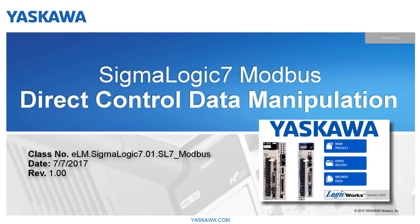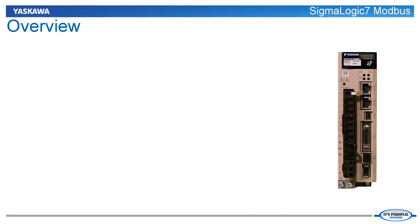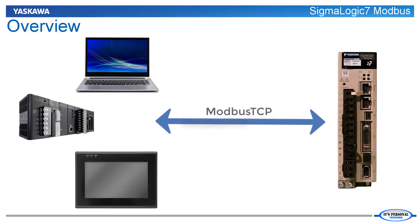This video is part of the Sigma Logic direct control certification process and describes the essential techniques to successfully control the Sigma Logic 7 Modbus servo using Modbus TCP registers. The Sigma Logic 7 Modbus product is designed to be controlled by a host device using the Modbus TCP protocol. The purpose of this e-learning video is to familiarize the user with the data manipulation skills required to interface with this register-based product.